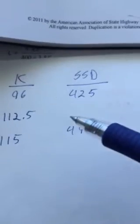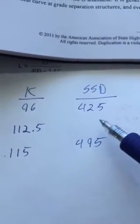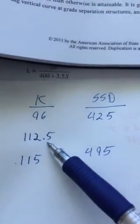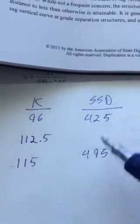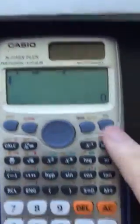Given that, we're trying to solve a stopping site distance at a specific k value which is predetermined and we need to linear interpolate between the values given in the table. Now enough gibberish, let's just get to it.